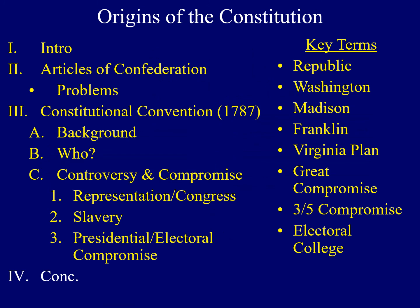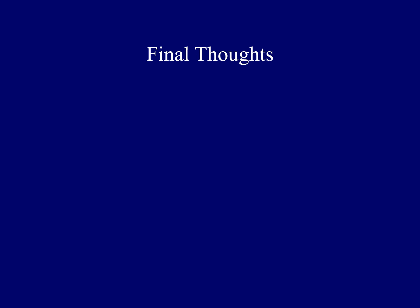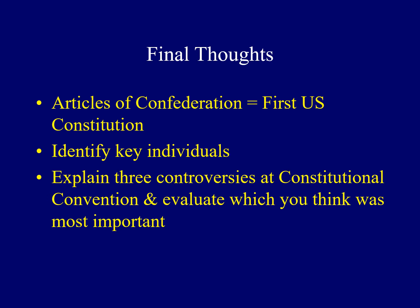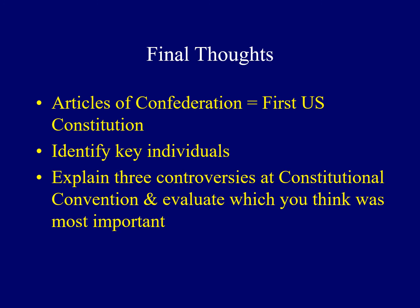To sum up some of the key ideas from this lecture: first, the Articles of Confederation was the name of the first Constitution of the United States. You should also be able to identify some of the key individuals who shaped events at the Constitutional Convention. Finally, you should be able to explain three controversies from the convention itself and evaluate which you think was the most important. That ends the first lecture for our class. I hope you learned something new — have a great day, everybody!